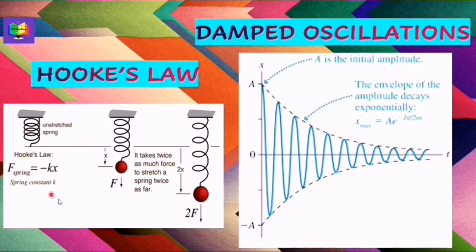To recap Hooke's Law: force is proportional to displacement, and k is Hooke's constant. The negative sign indicates that force is always directed towards the mean position. If the displacement is doubled, the force is also doubled.